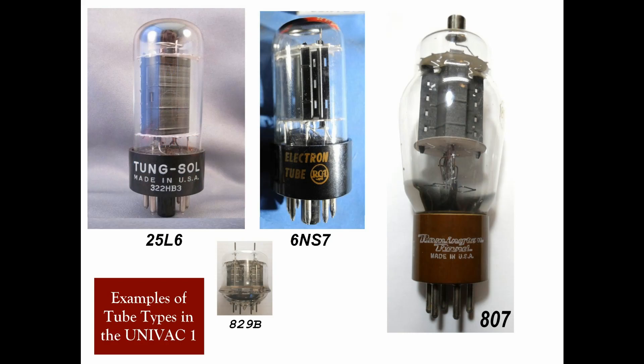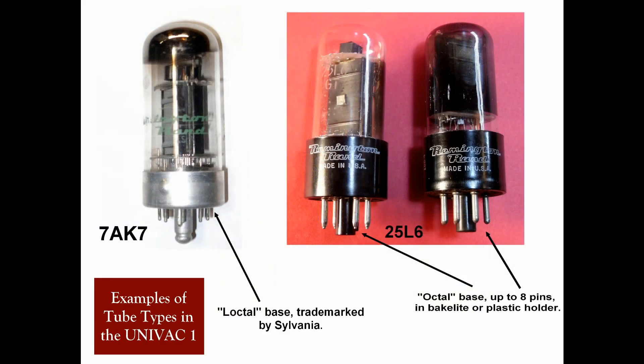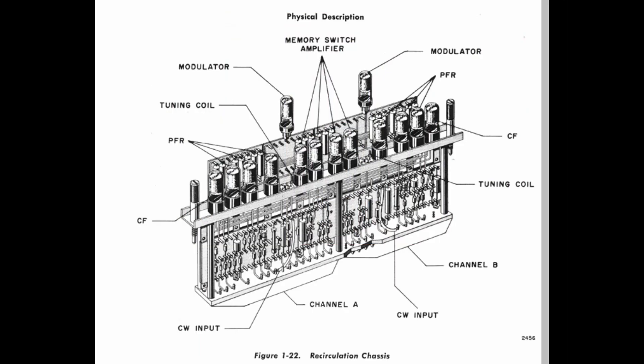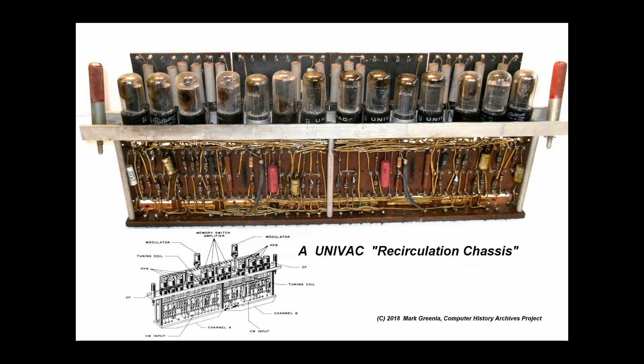It utilized serial circuitry, a 2.25 MHz bit rate, and had an internal storage capacity of 1,000 words or 12,000 characters. Shown here is an original UNIVAC-2 chassis, nearly 2 feet long.